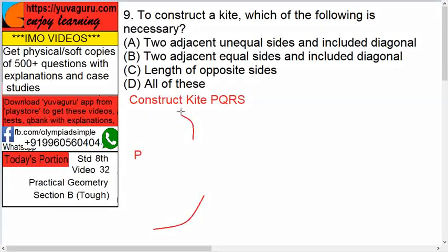You'll keep the compass at point P and draw an arc over here. Because two unequal sides are known. This is smaller, this is longer. Let's say this is 5, this is 7. So, you'll draw this arc at 5 and draw this arc at 7. Now, you know one diagonal. But where will you start? Where will you cut this? Because you don't know anything else. Right? So, with option A, it is not possible.